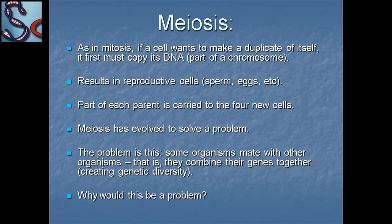In meiosis, part of each parent is carried to the four new cells. Meiosis has evolved to solve a problem: some organisms mate with other organisms, combining their genes together and creating genetic diversity.